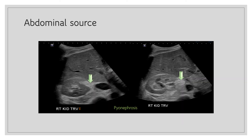This is an example of pyonephrosis — pus in the collecting system of the kidney — acting as an intra-abdominal source of sepsis. The arrow points to the echogenic material or pus, while the surrounding black areas correspond to hydronephrosis caused by urine blockage from the pus.